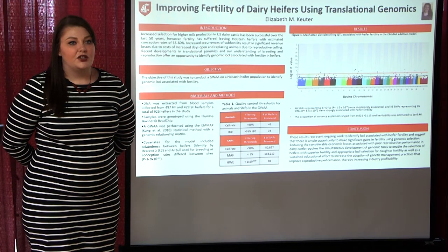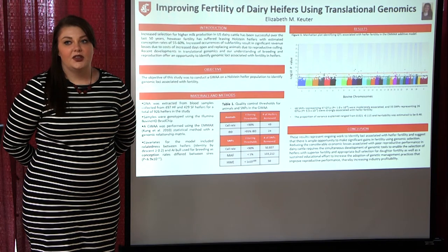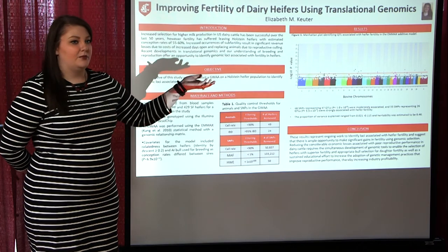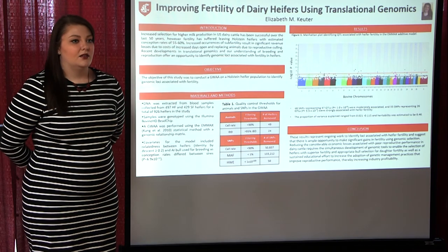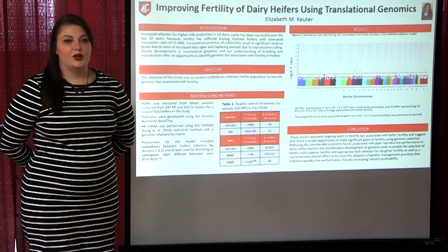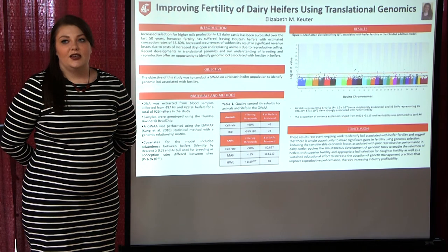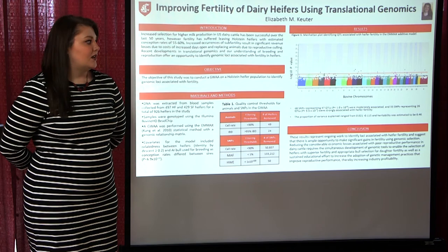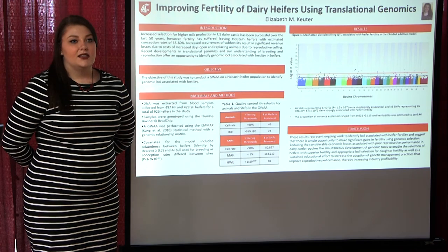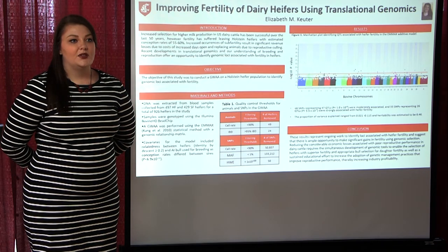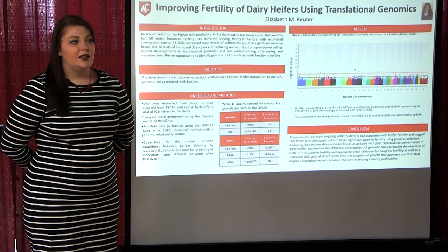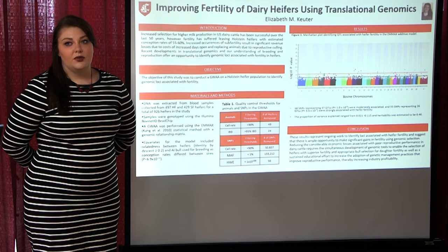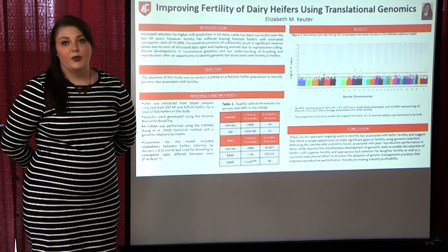We identified 73 regions of the genome to be associated with conception rate. These 73 regions can be seen in this Manhattan plot, where the x-axis shows the bovine chromosome and the y-axis shows the minus log 10 of the p-value. Each dot on the Manhattan plot represents a single marker, and those above the red line are considered to be highly associated with conception rate and represent the areas of most interest.